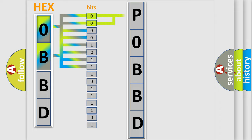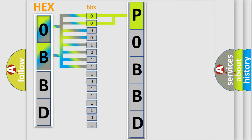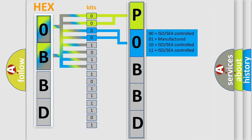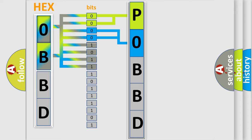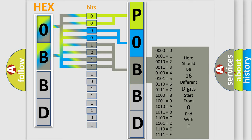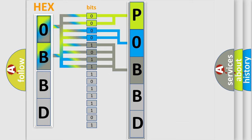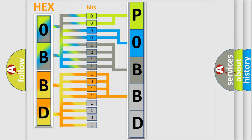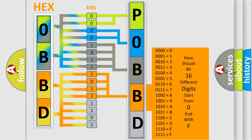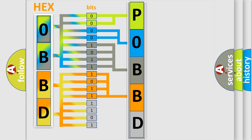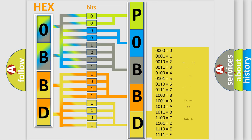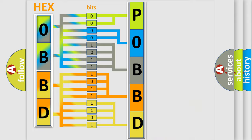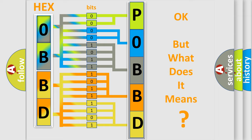By combining the first two bits, the basic character of the error code is expressed. The next two bits determine the second character. The last four bits of the first byte define the third character of the code. The second byte is composed of a combination of eight bits: the first four bits determine the fourth character, and the last four bits define the fifth character. A single byte conceals 256 possible combinations. We now know how the diagnostic tool translates the received information into a more comprehensible format.